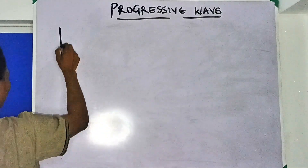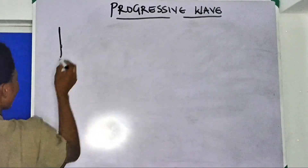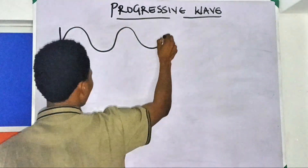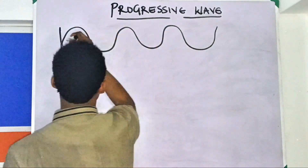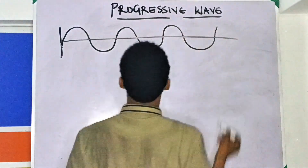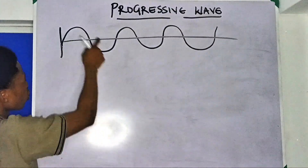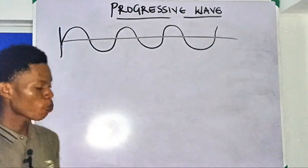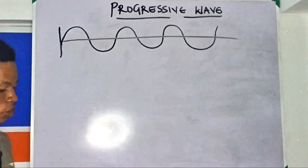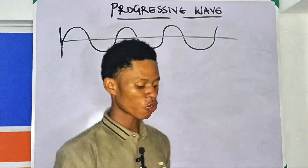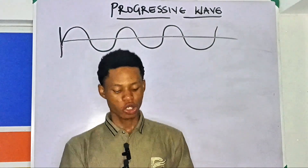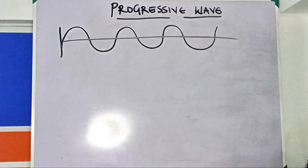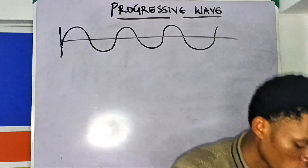In a progressive wave, imagine this is the anchor of a rope — as you throw the rope it will be moving along. That is what we call a progressive wave. So a progressive wave is a wave that spreads out from a vibrating source and through a medium, transferring energy as it travels.